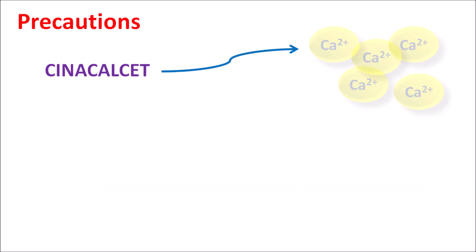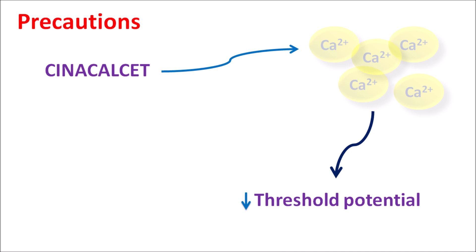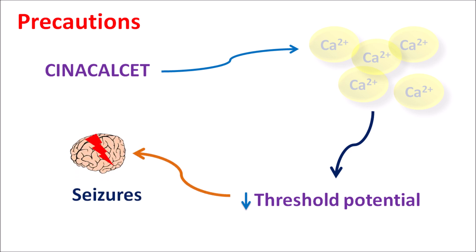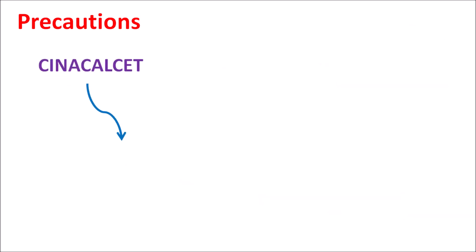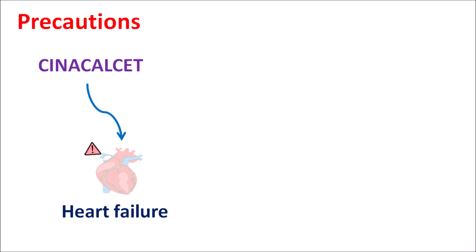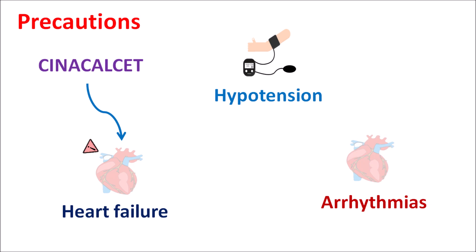This drug can reduce calcium levels, and because of reduced calcium levels, it can modulate neuronal activity. Cinacalcet can reduce the threshold potential for induction of seizures, so even a small stimulus can induce seizures in patients. Care should be taken as this drug can increase the risk of seizures by reducing the threshold potential. Similarly, this drug should be carefully given in patients with heart failure, as it can increase the risk of heart failure in susceptible patients. Due to development of heart failure, it can induce hypotension or produce cardiac arrhythmias.